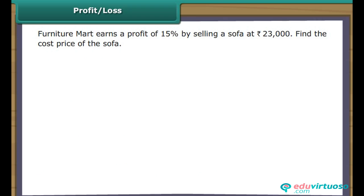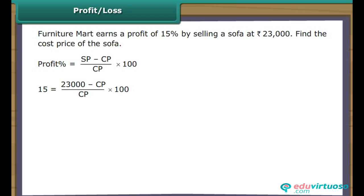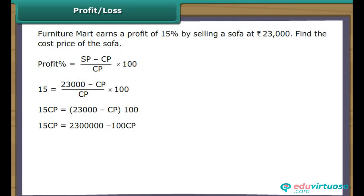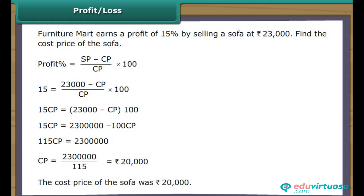Furniture Mart earns a profit of 15% by selling a sofa at Rs. 23,000. Find the cost price. Using: Profit% = (SP − CP) / CP × 100 → 15 = (23,000 − CP) / CP × 100 → 15CP = (23,000 − CP) × 100 → 115CP = 23,00,000 → CP = 23,000 / 115 = Rs. 20,000. The cost price of the sofa was Rs. 20,000.